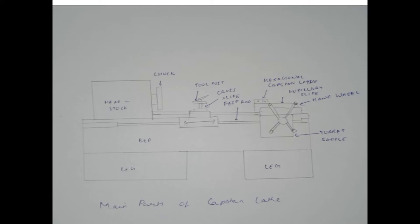Above the legs is the bed. It is a rectangular box casting carrying stiffening longitudinal ribs and provided with parallel guideways to enable sliding of carriage and turret saddle. At the same time, it supports the headstock at one end. In the figure, I have shown the headstock to the left end.